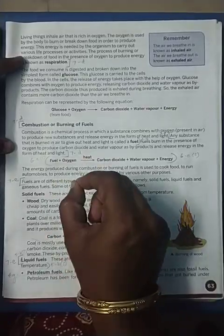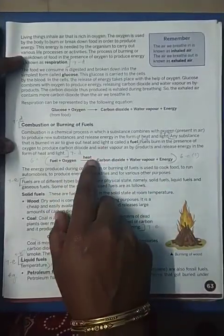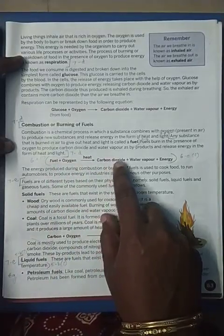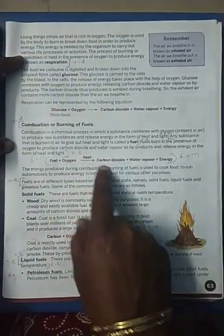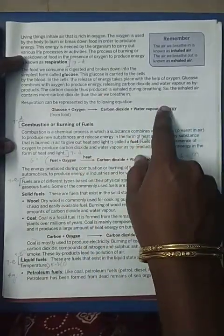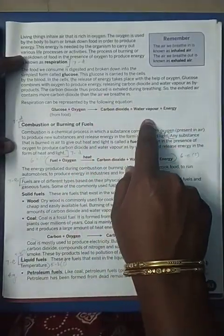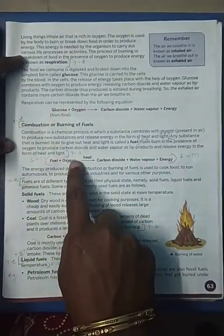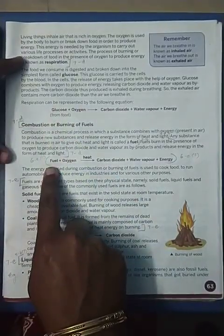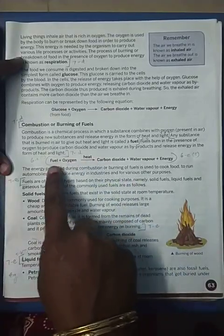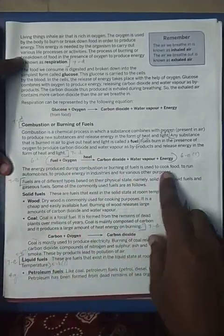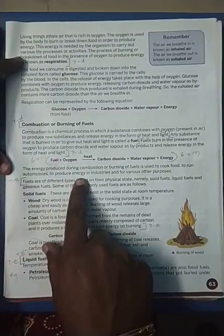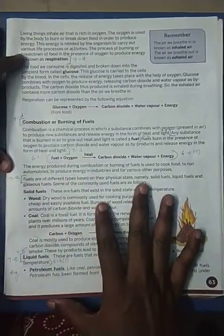When you light the fuel, you get carbon dioxide, water vapor, and energy. This is always the product whether oxygen is reacting with glucose or with fuel. We use fuel for cooking food, to run automobiles, to produce energy in industries, and for other purposes.